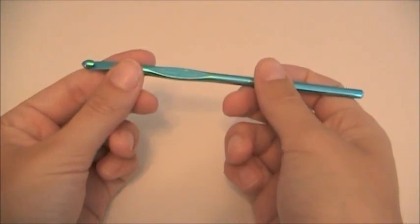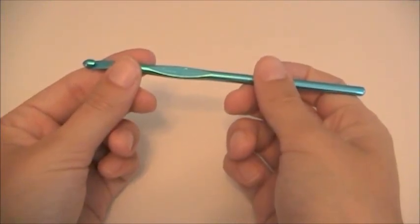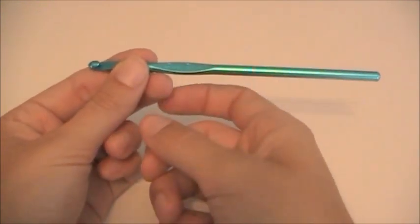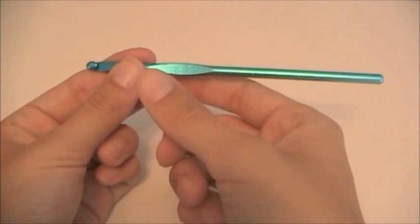There are two common ways of holding a crochet hook. The first one is a pencil hold. To do the pencil hold, you grip the crochet hook from underneath.